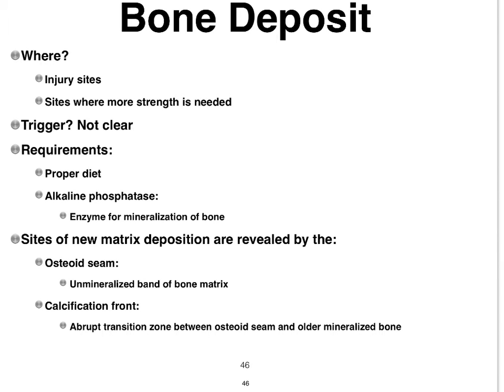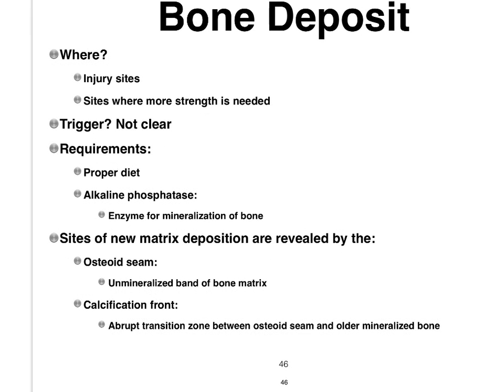Let's first focus on bone deposits and where they occur. In adult bones, bone deposit needs to occur in areas where there is an injury — let's say you break a bone, that bone needs to heal, and clearly more bone tissue needs to be produced. So bone deposit occurs at injury sites.